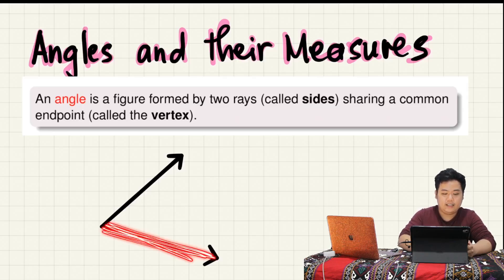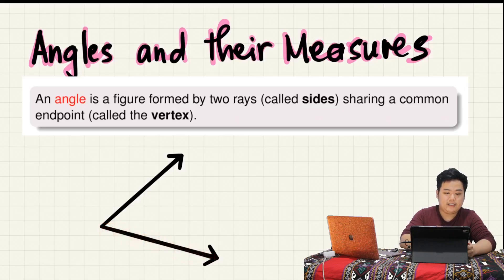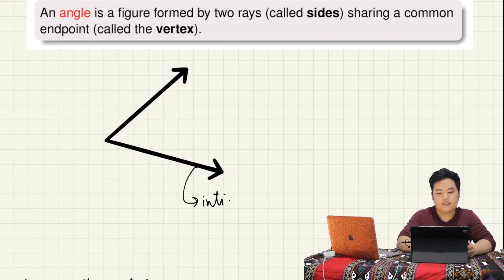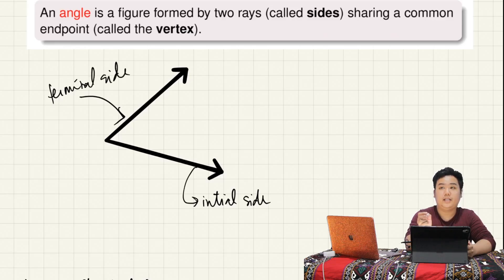Let's say ito yung fixed side natin. The fixed side is what we call the initial side, and the other side is the terminal side. Para malaman natin kung sino yung initial terminal side, nilagyan natin siya ng parang arc na arrow. Yung head ng arrow nakapoint sa terminal side, yung end niya nakapoint sa initial side.